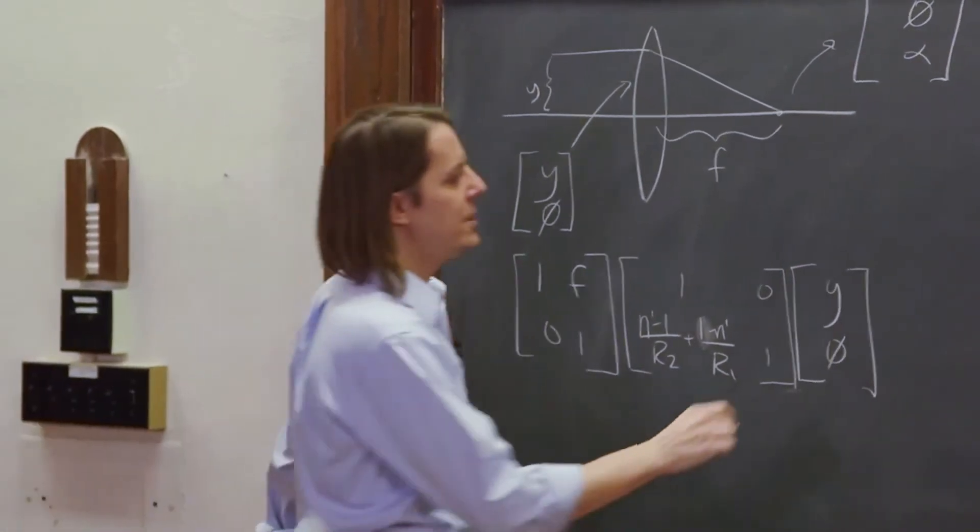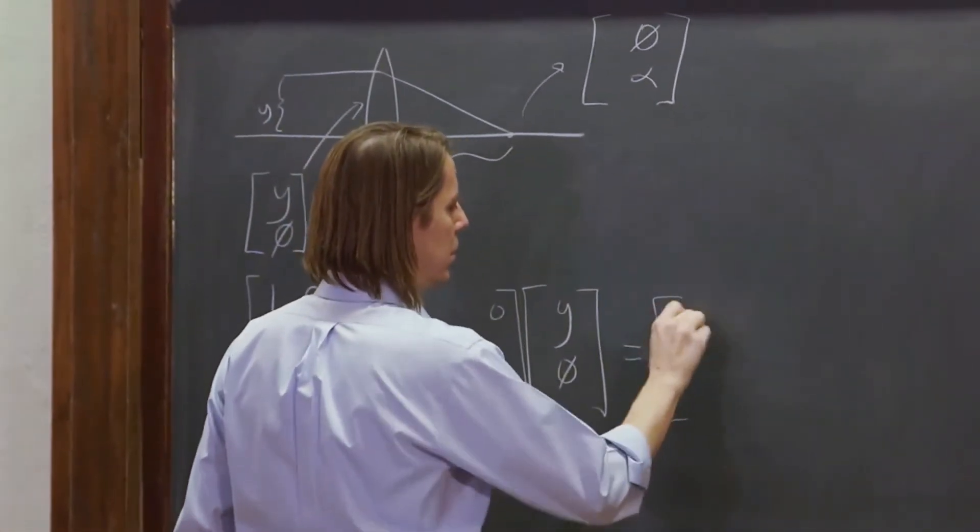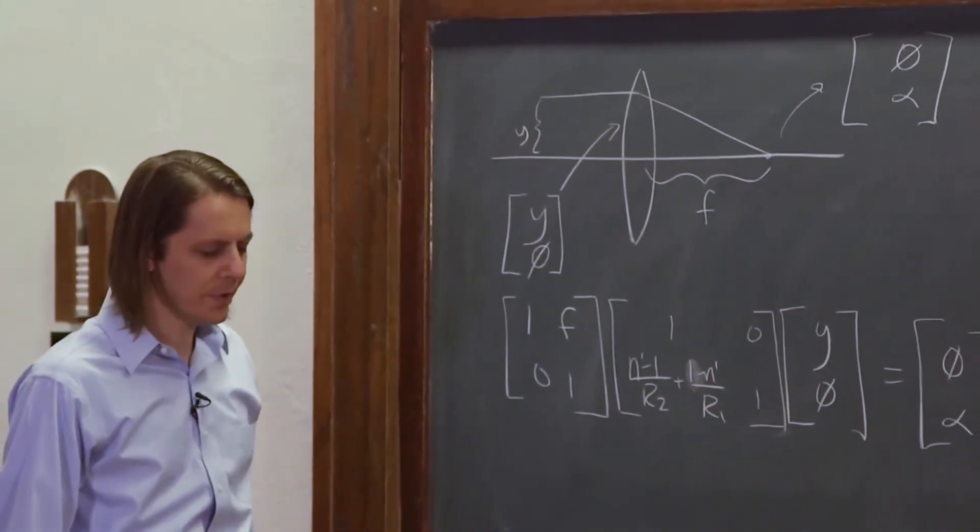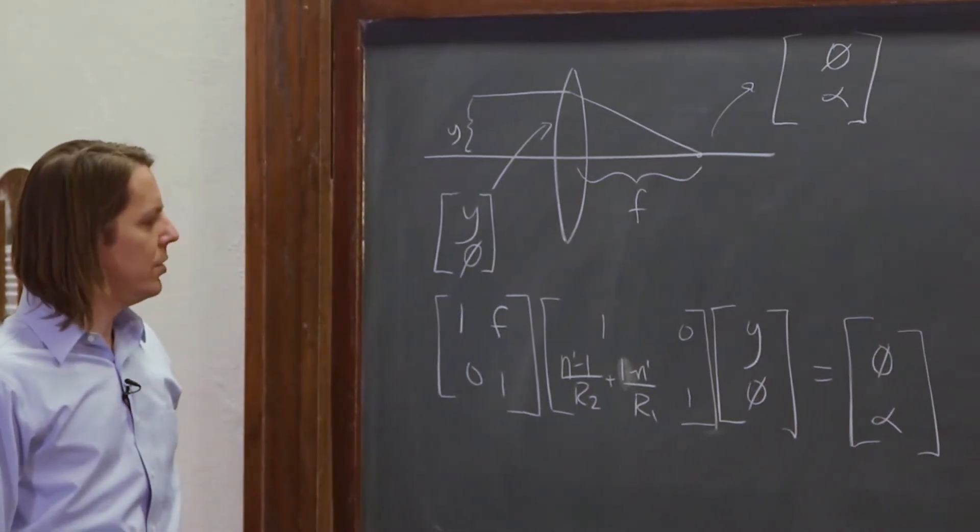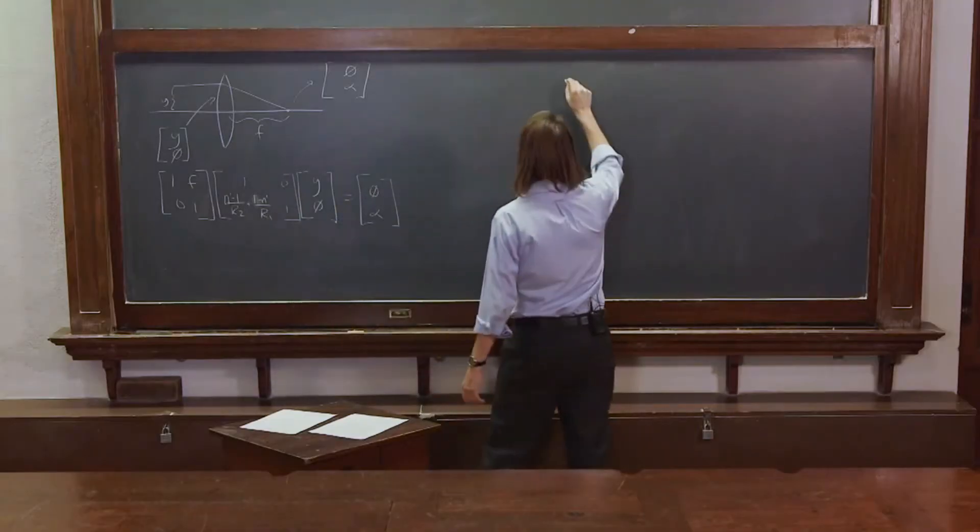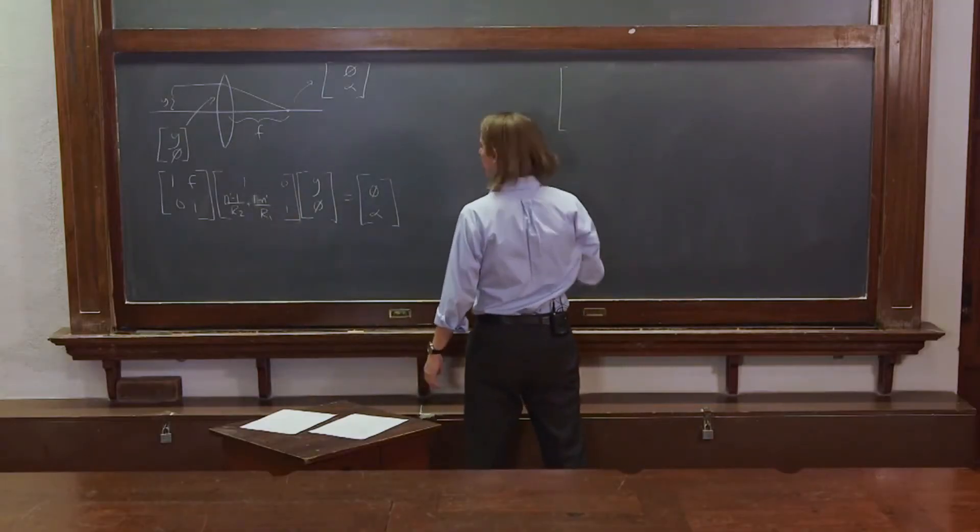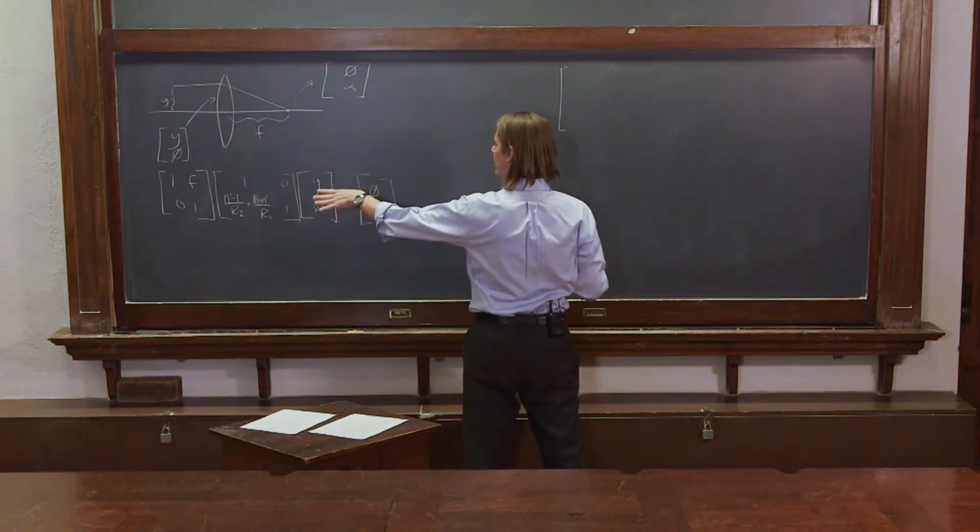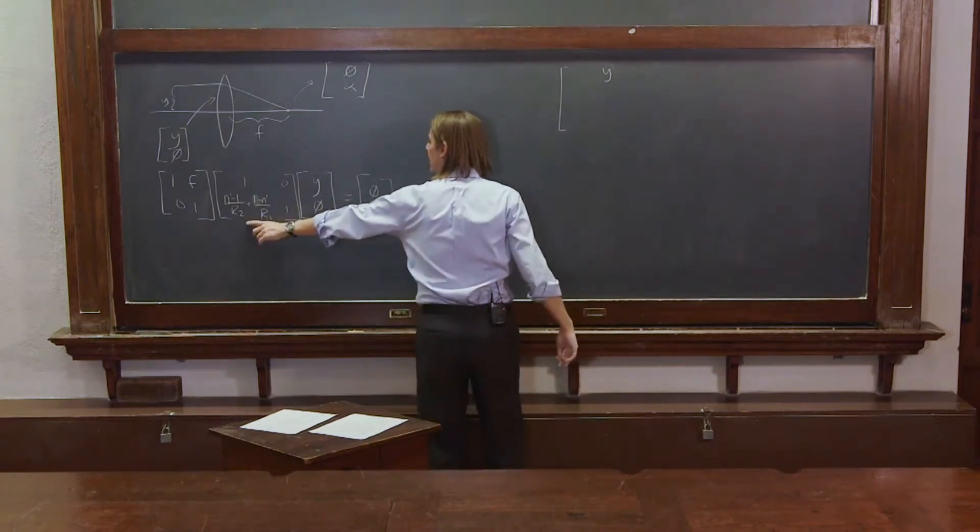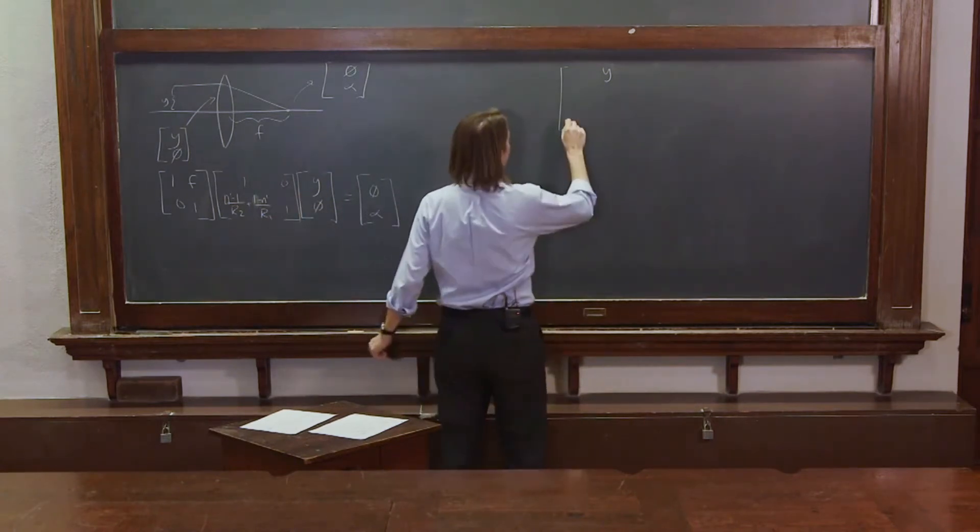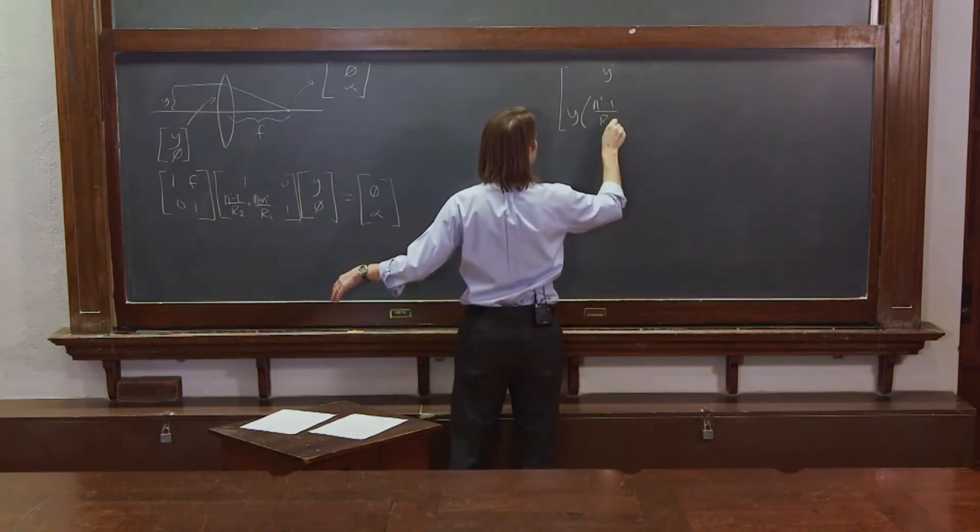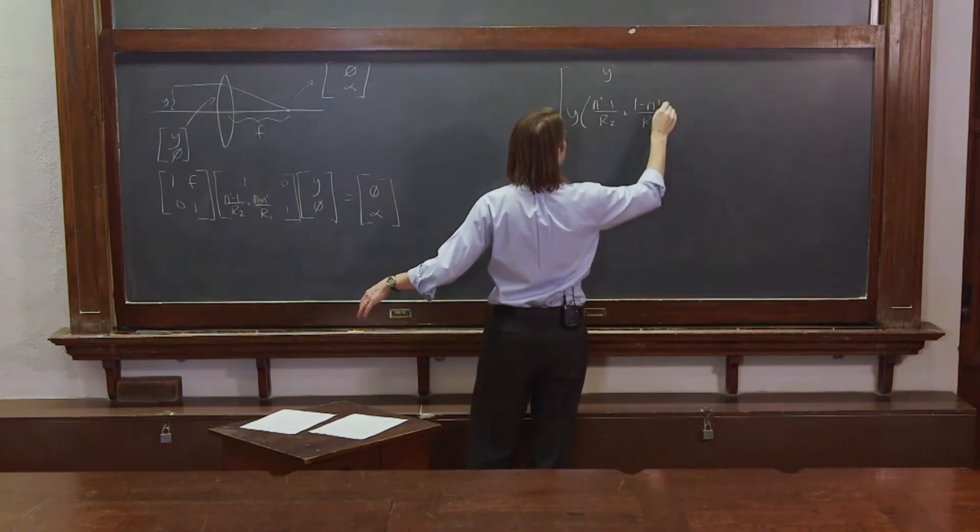If you put all those together, those should be equal to 0, alpha, if it focuses the light at a distance f. So let's go through and multiply them and see what happens. I'm going to multiply that times that, and I'm going to get a vector that's going to be y on the top, and now it's this angle that's going to get complicated. This term times y plus 0, it's just y times n prime minus 1 over r2 plus 1 minus n prime over r1.